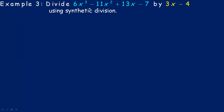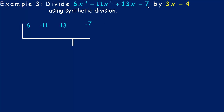Example number 3: we're asked to divide this cubic polynomial by 3x minus 4. This is the last thing I want to show — how you handle synthetic division when the binomial isn't just x minus something or x plus something. For long division, you would just put the 3x minus 4 on the left. The coefficients 6, negative 11, 13, and negative 7 go across the top. The restriction is 3x minus 4 cannot equal 0, so x cannot equal 4 thirds. So 4 thirds is what goes on the left of the synthetic division symbol.